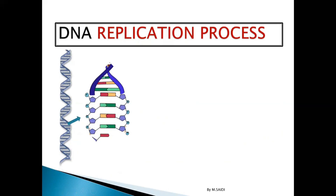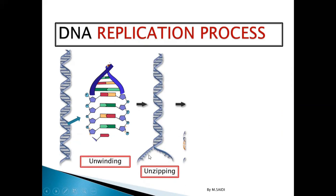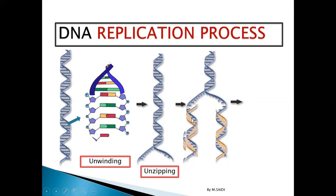After forming two strands, the weak hydrogen bonds between the bases break - you can say the DNA 'unzips' or that 'weak hydrogen bonds break'; both mean the same thing. This unwinding exposes the two strands. The two strands open up, and free nucleotides from the nucleoplasm come and arrange along each exposed strand.